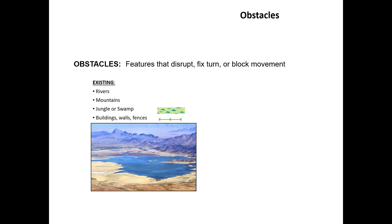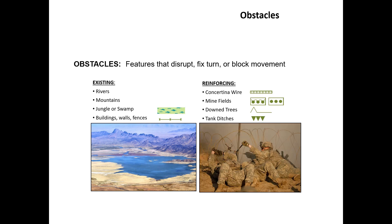Obstacles are features that are going to disrupt, fix, turn, or block your movement — get in your way. They can be broken down into existing obstacles: things like rivers, mountains, swamps, buildings, fences — parts of the terrain that are already there and not specific to military operations. The second kind is reinforcing obstacles. These are things that military forces put in place to create even more of an obstacle and reinforce the terrain.